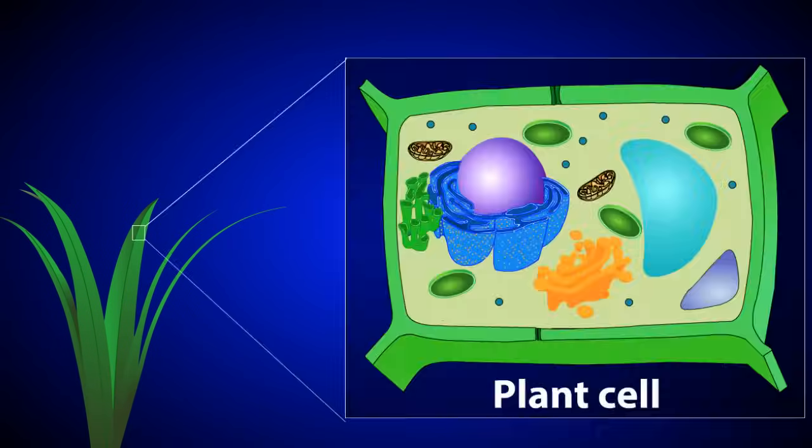The leaves of this plant have cells that carry out photosynthesis. If we zoom in on this photosynthetic plant cell, we can see the chloroplast where the reactions of photosynthesis occur.